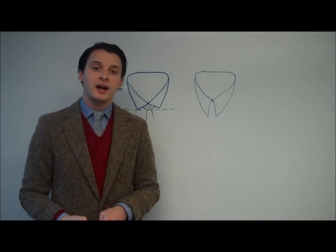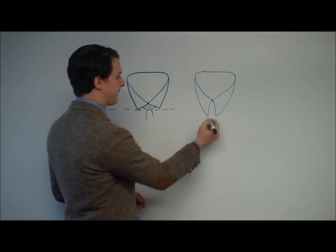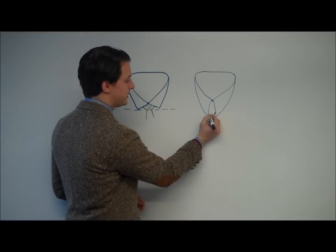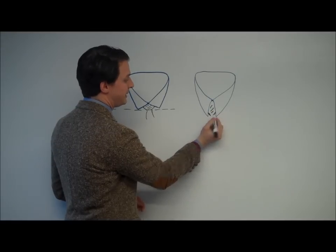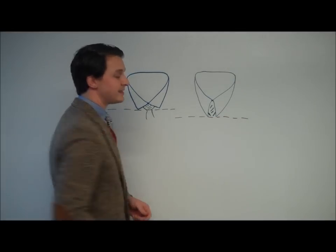With the forward point collar, I would pick a fuller knot, so I would pick a full Windsor. This knot would come close to meeting, if not exactly meeting, the two bottom points, creating that, again, nice, even flow.